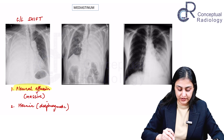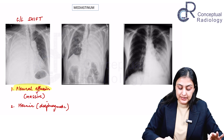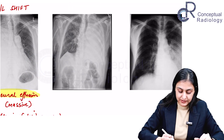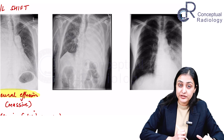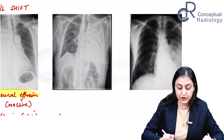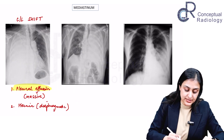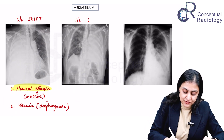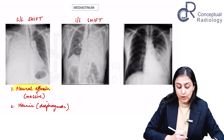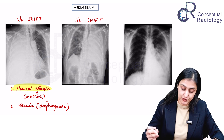Now let's talk about a mediastinum shifted to the ipsilateral side. Look at this x-ray: non-rotated, adequate penetration, good inspiration. The left hemithorax is opaque, and the trachea has been pulled to the ipsilateral side. When you have an ipsilateral shift, it means there is volume loss.